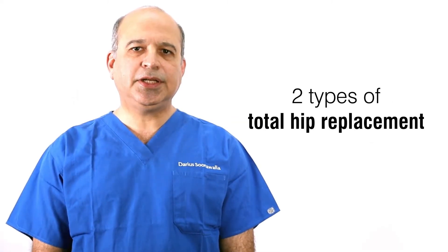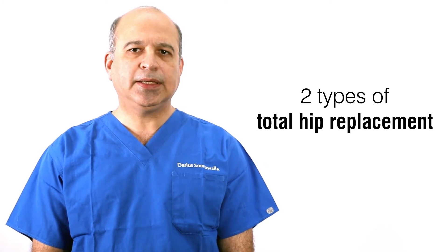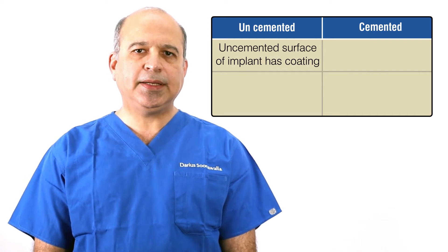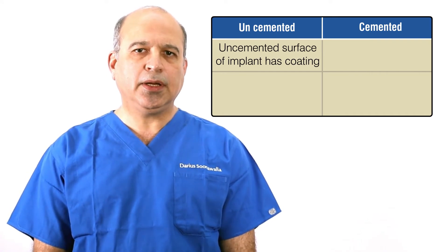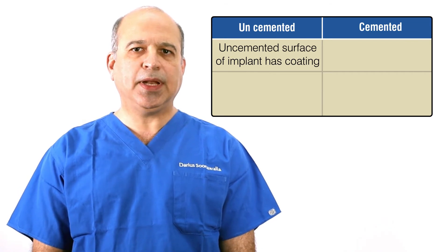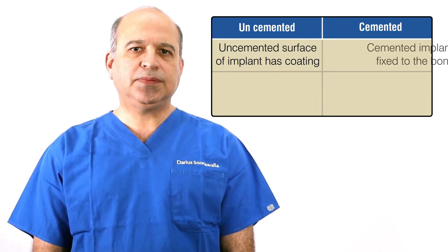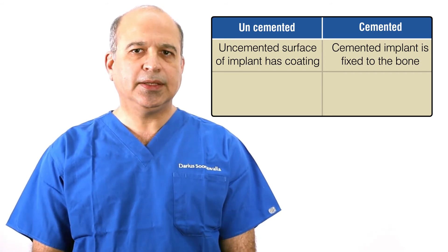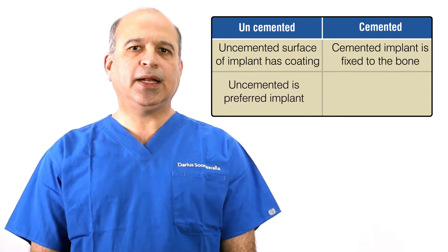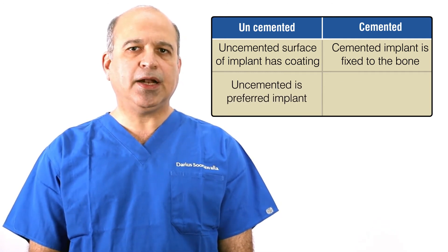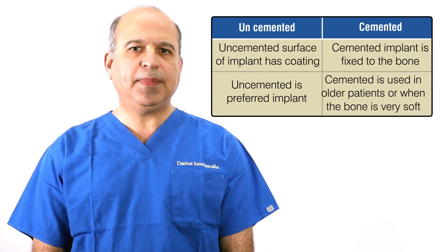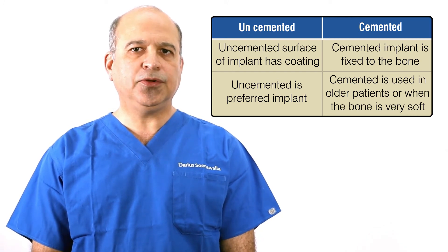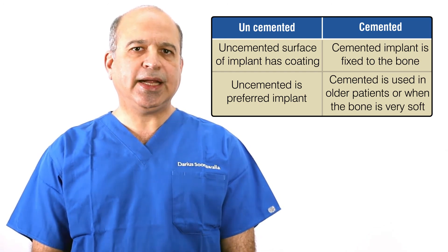There are essentially two types of total hip replacement: an uncemented and a cemented. In an uncemented, the surface of the implant has a coating which allows the bone to bind to the implant, whereas in a cemented, the implant is fixed to the bone using special bone cement. Currently, an uncemented is the preferred implant for most patients, while a cemented is used in older patients or where the bone is so soft that an uncemented is likely to fail.